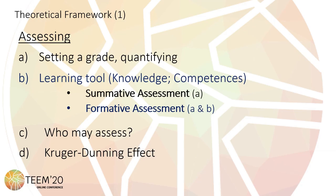As said in the previous slides, professors and students may assess. Researchers have identified an effect, the Kruger-Dunning effect, that may explain biases when someone has deficits due to not being completely competent in an area.